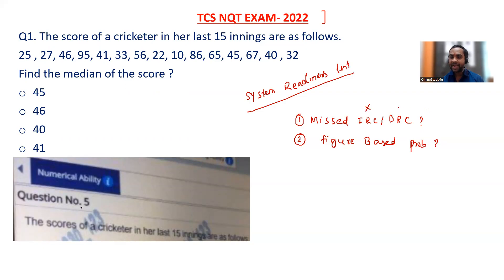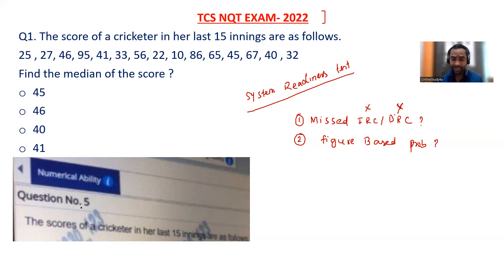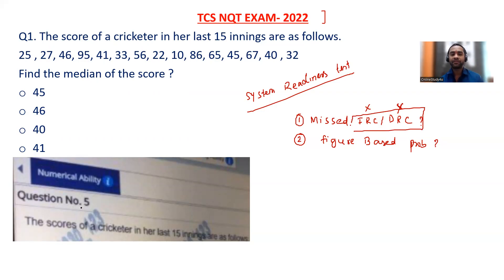If you miss IRC and DRC, nothing to worry — there won't be any problem. You just have to make sure that your system is compatible with the TCS examination software and you will be able to write the test. If you missed IRC and DRC, it's not like you will not be able to write the actual test — you will still be able to give the actual TCS examination.